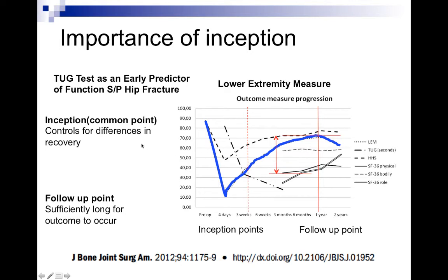That's why inception is so heavily emphasized as the Level 1b criteria for prognostic studies.